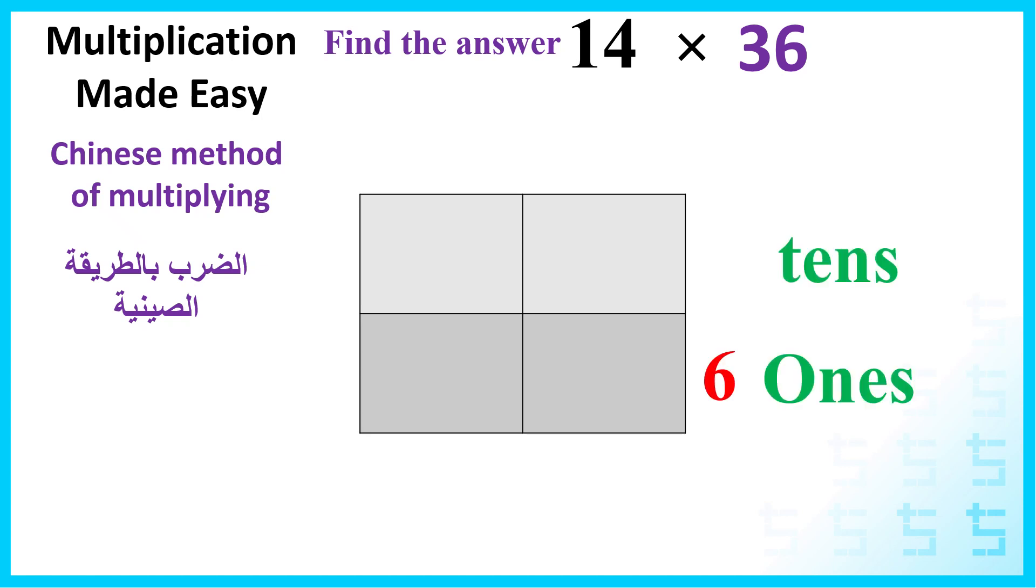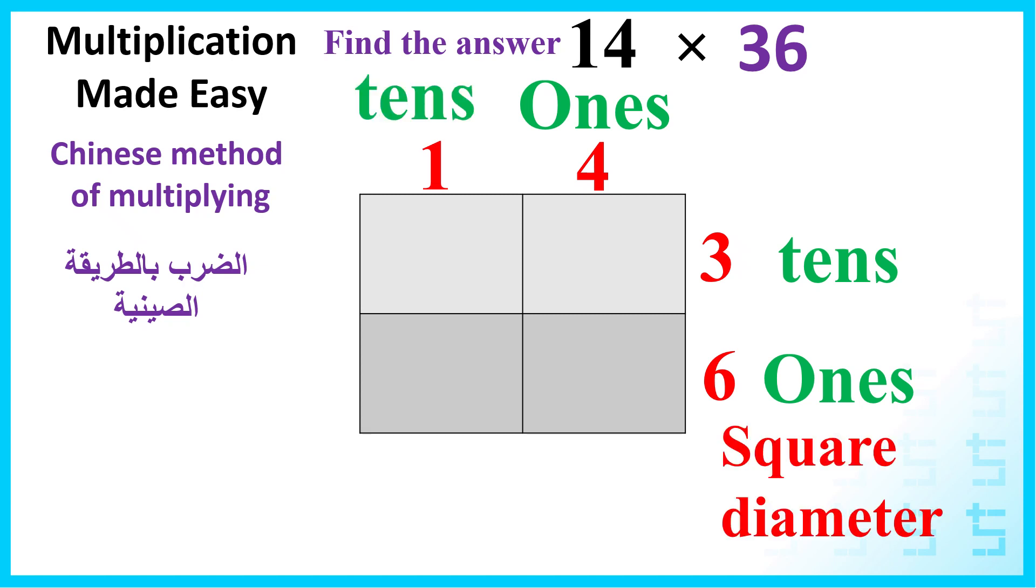We will write 36 on the right and 14 on the top. Now we will draw the diameter of each square and then multiply the numbers. 3 times 4 equals 12. 3 times 1 equals 3, but I write 0 here. 6 times 4 equals 24.